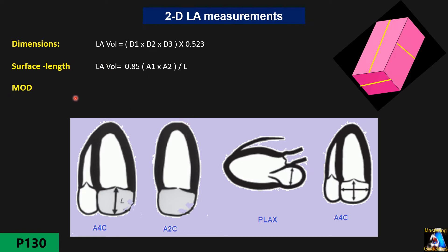For measuring the left atrium, we have three techniques. First is the linear dimension method: we measure three dimensions — height (AP diameter), length, and width. For the AP dimension, we go to the parasternal long-axis view at end-systole and measure inner to inner, perpendicular to both walls. For the other two dimensions, we go to the apical four-chamber view at end-systole and measure the two largest diameters.